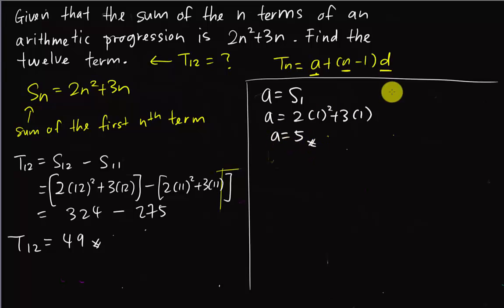Then if I want to find d, I will need to use the second term minus the first term. Because d is the common difference, we can use T2 - T1. T1 we already know is 5. So what I will do is try to find S2 first, which means sum of the first term plus second term. So S2, I substitute 2 into n: 2(2²) + 3(2). This is 4 × 2 = 8, and 8 + 6 = 14.